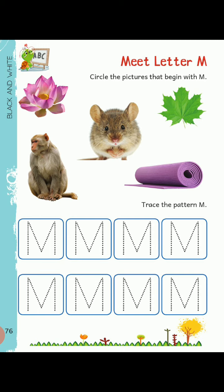Let's check all the images one by one. Look at your mobile screen and start with me. F is for flower. M is for mouse. L is for leaf. M is for monkey. And M is for mat.